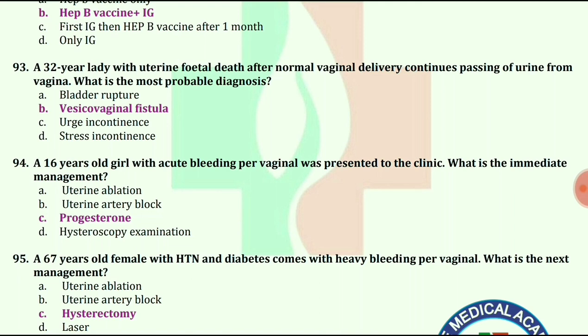A 67-year-old female with hypertension and diabetes comes with heavy bleeding per vagina. What is the next management? The answer is hysterectomy — removal of the uterus.